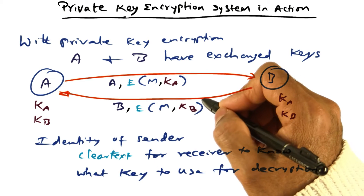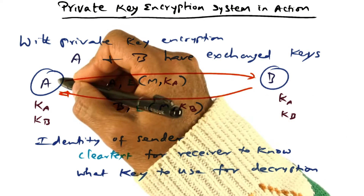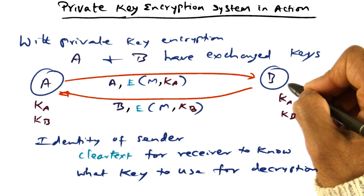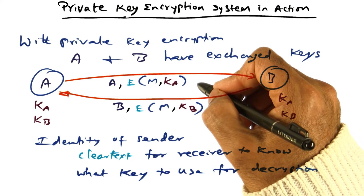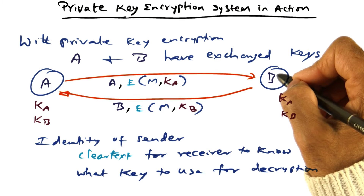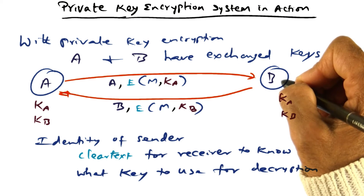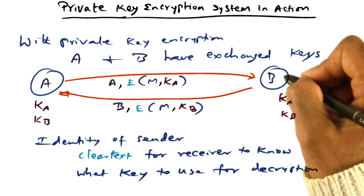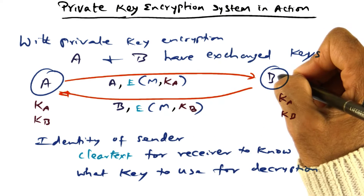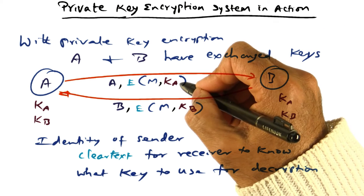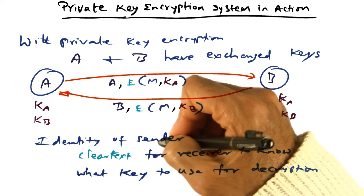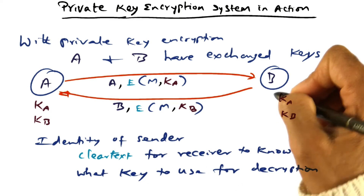One of the things that should be obvious is that in order for this private key encryption system to work, both entities need to know, when they get an encrypted message, who is the author of that message — because that is the only way they know what key to use to decrypt the message. So if A sends a message to B, for B to know that it has to use key KA, it needs to know the identity of the sender. So the identity of the sender has to be sent in clear text.